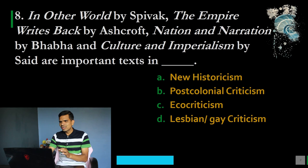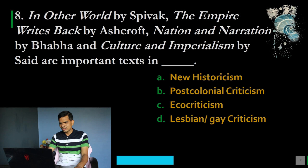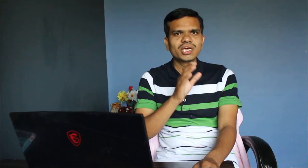Question number 8: In Other Worlds by Spivak, The Empire Writes Back by Ashcroft, Nation and Narration by Bhabha, and Culture and Imperialism by Said are important texts in which critical school? Options: A. New historicism, B. Post-colonial criticism, C. Ecocriticism, D. Lesbian or gay criticism. The correct option is B, post-colonial criticism. Scholars like Gayatri Chakravorty Spivak, Homi K. Bhabha, Edward Said, and Bill Ashcroft are important thinkers in post-colonial theory.